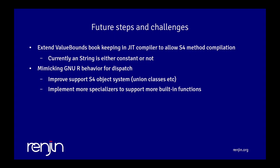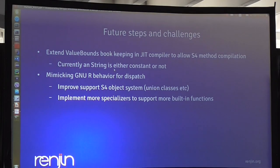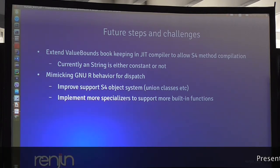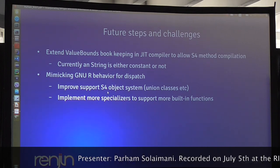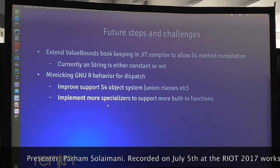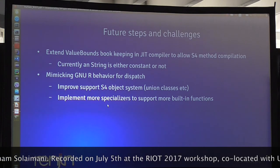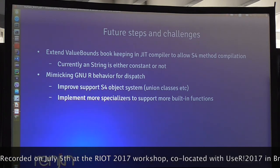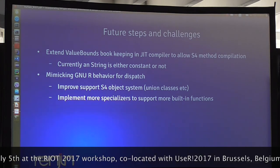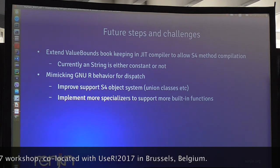To be able to do that, we have to improve the value balance bookkeeping right now - it's either a constant or not, and we have to extend that. We have to also better mimic the GNU-R behavior for dispatch. There are parts that we haven't looked at, like union classes. We need also to extend the number of specializers we have for built-ins to support more work for ourselves.